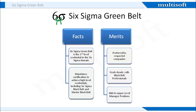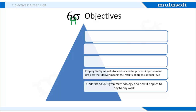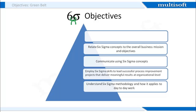When you attend the Green Belt training, you will understand the Six Sigma methodology and how it applies to day-to-day work. You will gain expertise in employing Six Sigma skills to successfully lead process improvement projects. Individuals become competent in communicating using the Six Sigma concepts, can relate the methodologies to business objectives, and can effectively apply the five-step DMAIC model as a framework to organize process improvement activities.